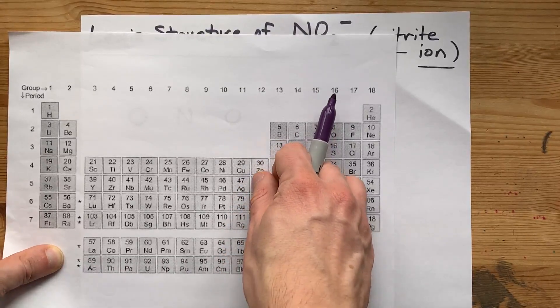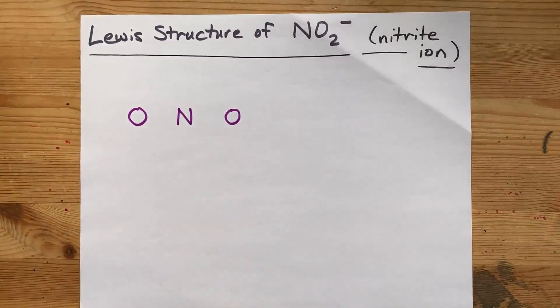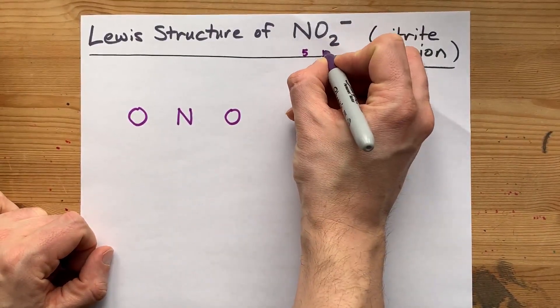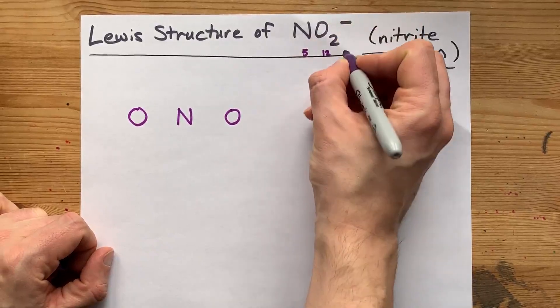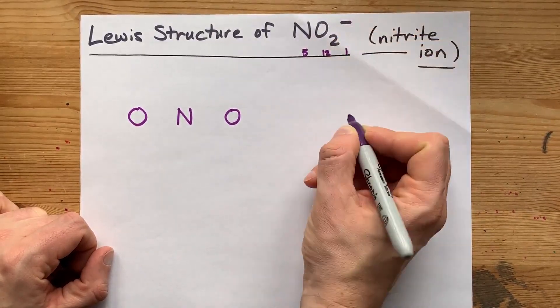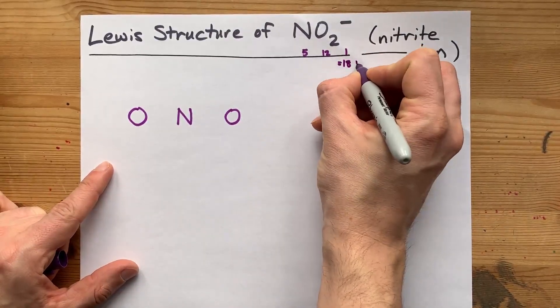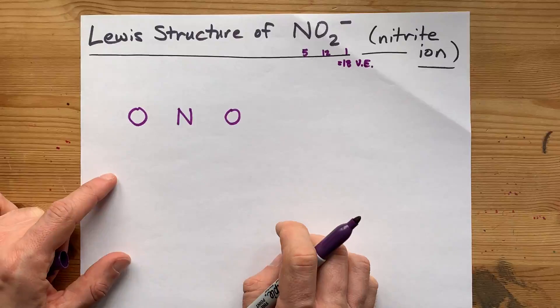Oxygen brings six each. That means I get five from this nitrogen, I get a total of twelve from these oxygens and a bonus electron from that minus one charge. That gives me eighteen valence electrons to deal with.